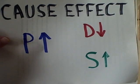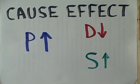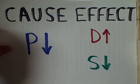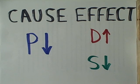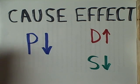So when price goes up, demand goes down, supply goes up. When price goes down, demand goes up and supply goes down. So to remember these dynamics, just remember the pigeon, the snake, and the dog.